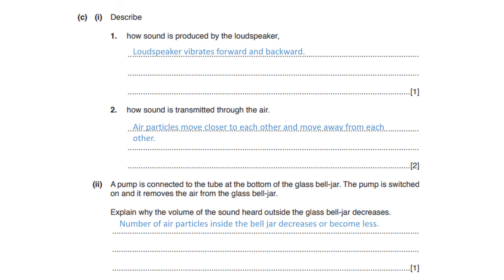Part C1: describe how sound is produced by the loudspeaker. Sound is produced when the loudspeaker vibrates forward and backward. Part C2: how is sound transmitted through air? When the loudspeaker vibrates forward, it pushes the air particles near it, causing them to move closer together. When it vibrates backward, it pulls the air particles away so they move apart. This creates compressions and rarefactions, transmitting the sound wave through the air.